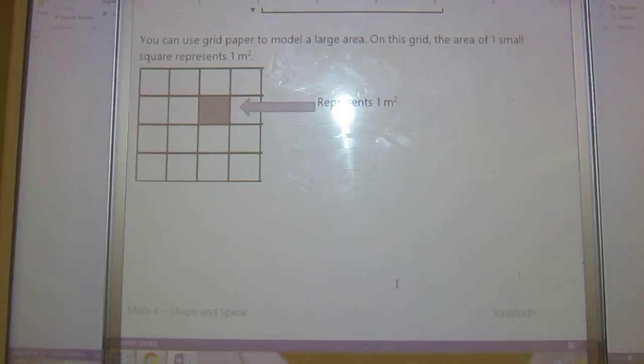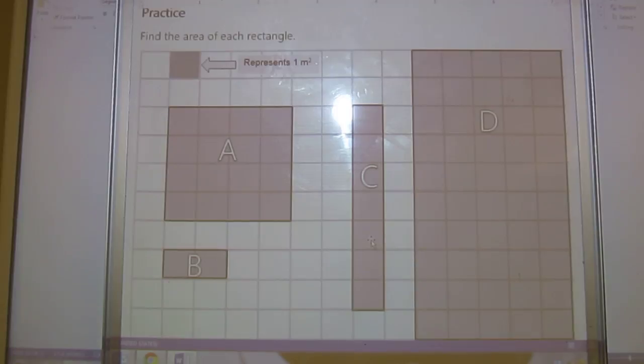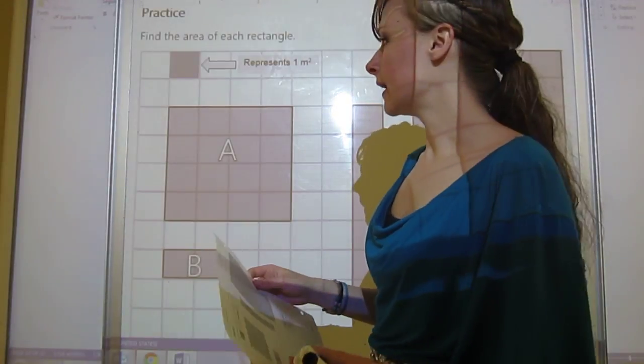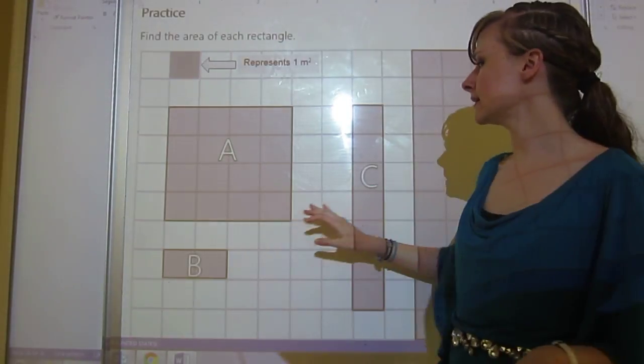If we flip to the back of our papers, we've got practice. So it's a pretty short and sweet lesson. What we need to do is find the area of each rectangle: A, B, C, and D.